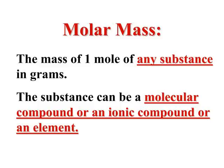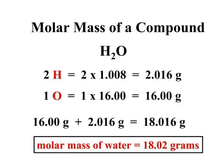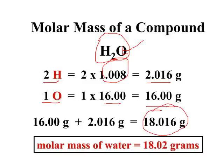The molar mass of an element or compound is the mass of 1 mole of that substance. To find the molar mass, use the periodic table and add up all the average atomic masses. For example, the molar mass of water: 2 moles of hydrogen atoms times 1.008 grams per mole gives 2.016 grams of hydrogen, plus 1 mole of oxygen at 16 grams per mole — adding these up gives you the molar mass of water.